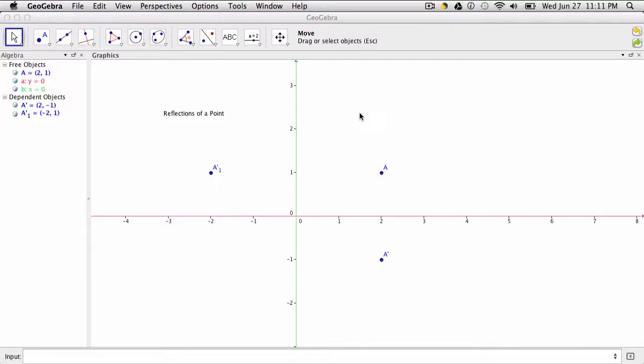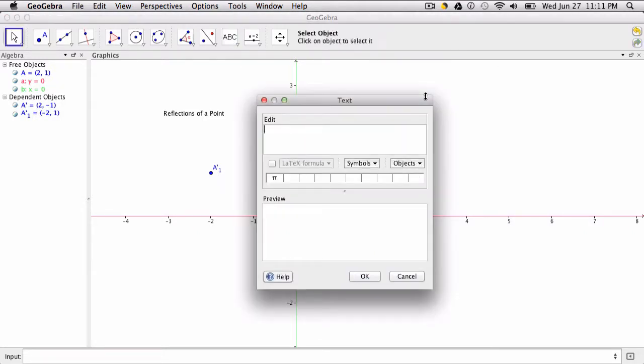In this video we're going to be looking at dynamic text and what dynamic text does is it changes with the values that you're trying to describe with that text. So what I do is I click my text tool and I click where I want the text to appear.